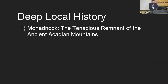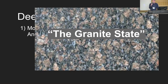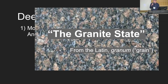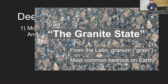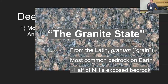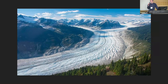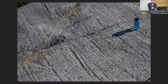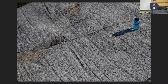Monadnock is a tenacious remnant. But what about granite? We're the Granite State. Granite is the most common bedrock on Earth; half of New Hampshire's exposed bedrock is granite. What exposed it? Glaciation. The glaciers are a huge part of the story of this region. You can see striations across the face of Monadnock — evidence of the glacier scraping rock and boulder over the surface.